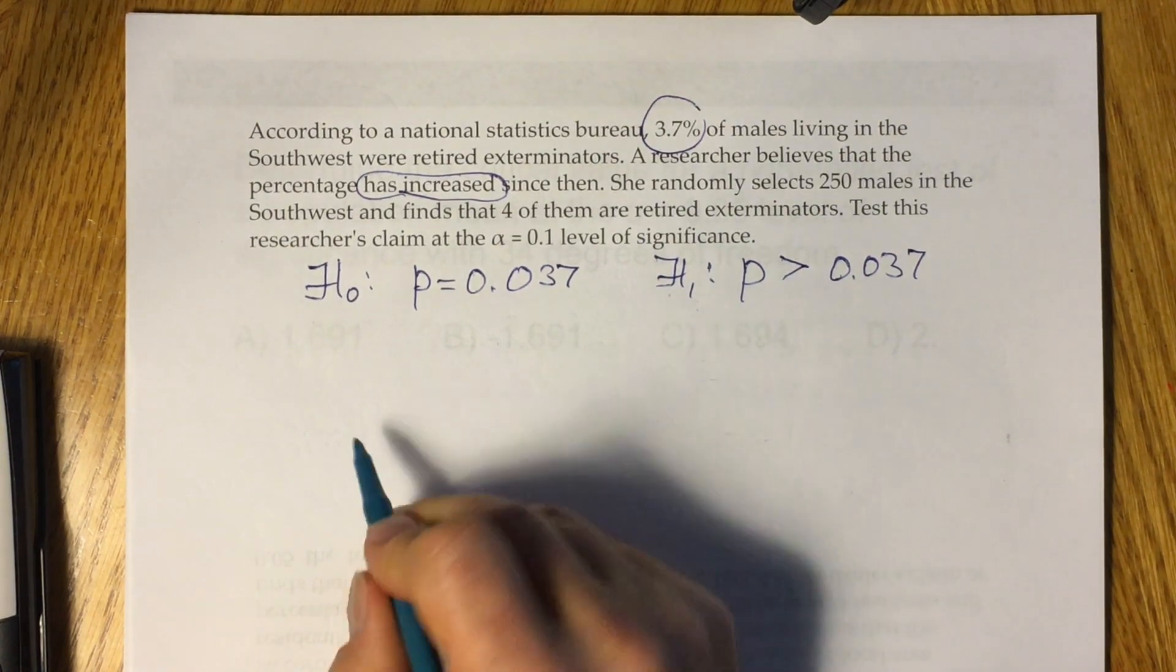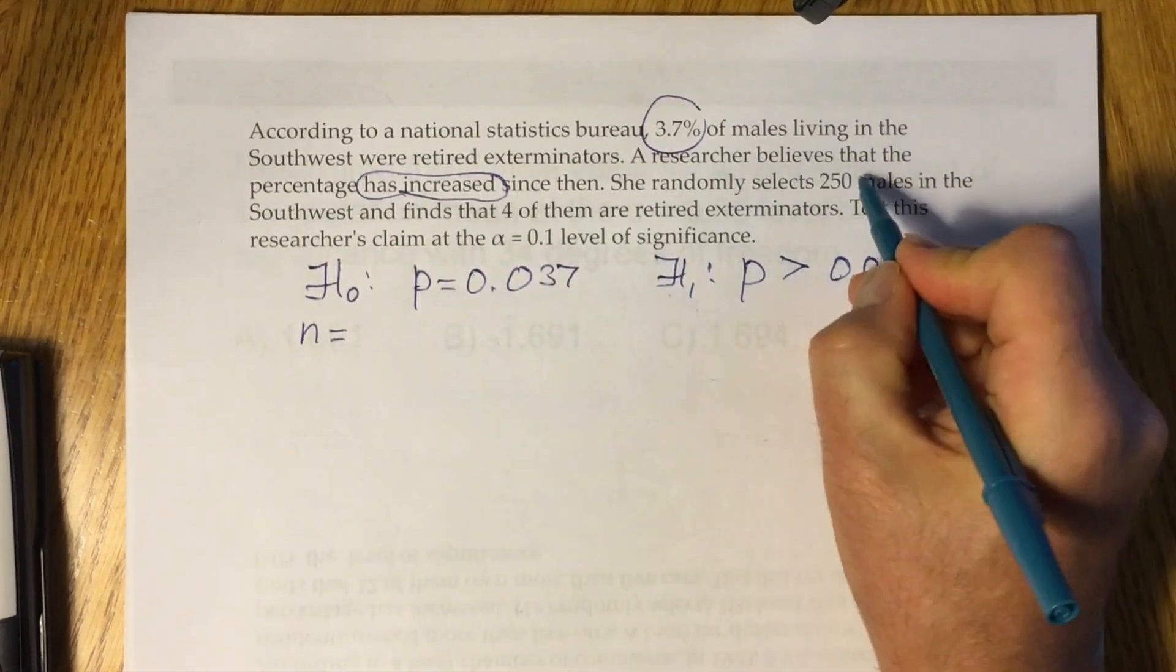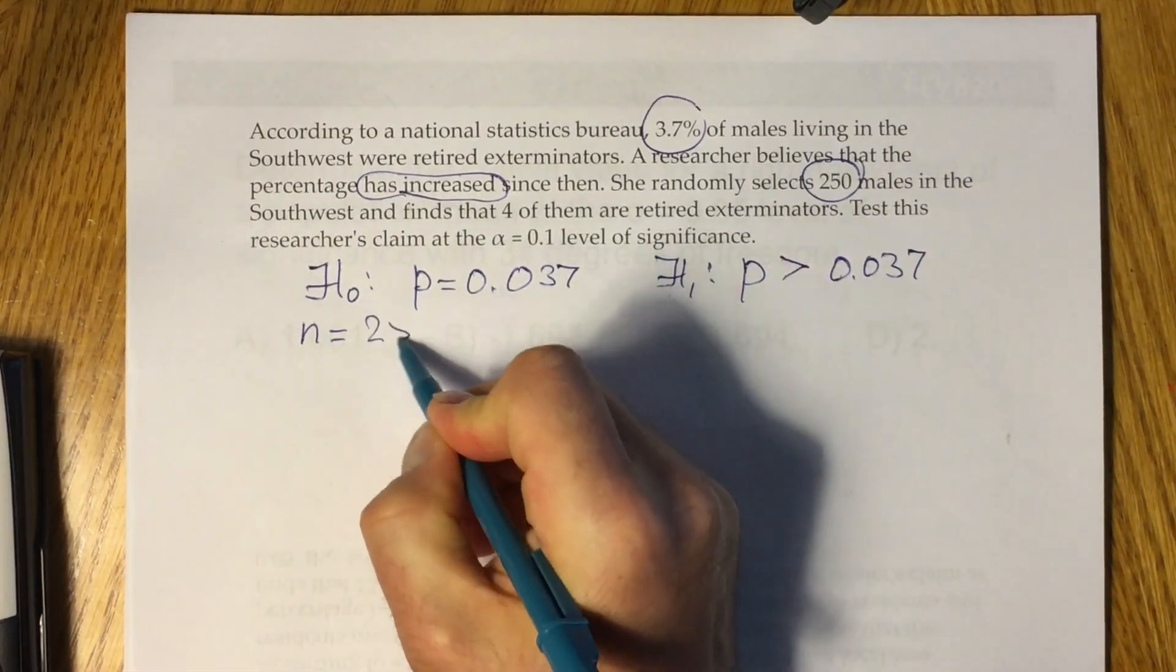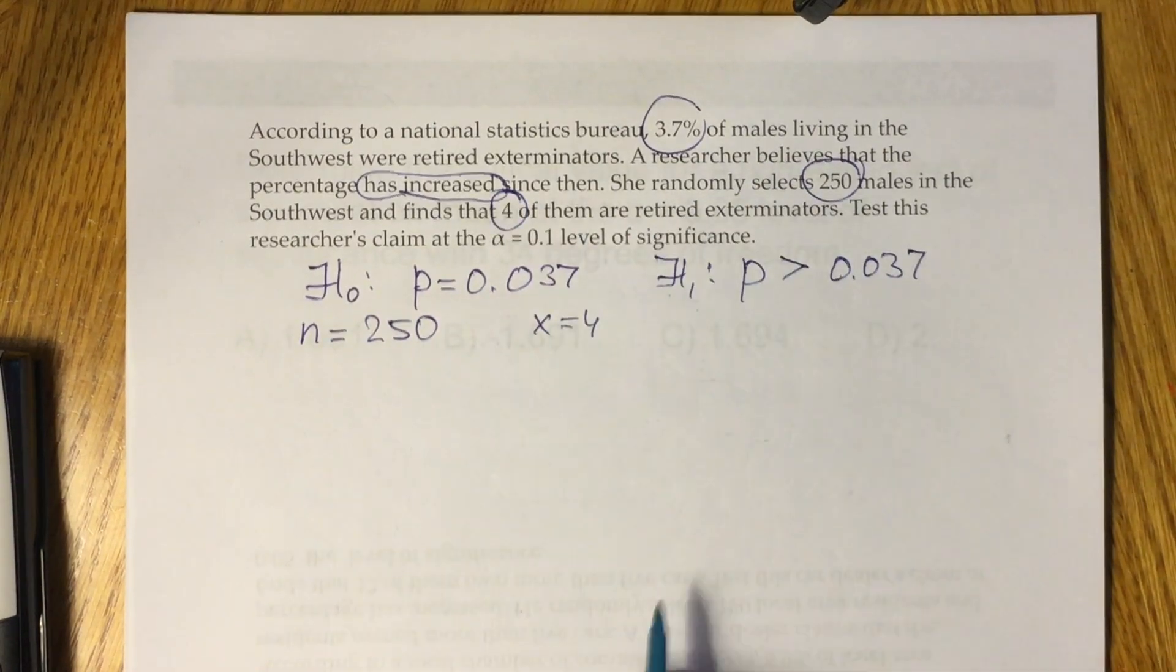Next step, we have to pick up n and x which is easy. n is sample size 250 and x is 4, how many of the sample individuals share particular feature.